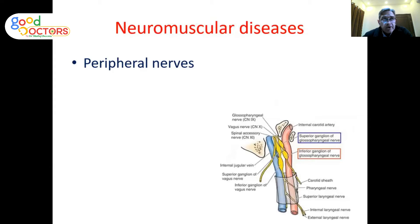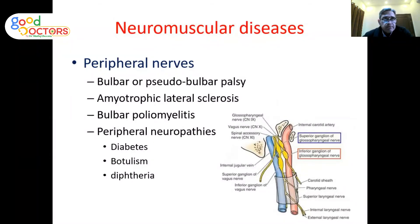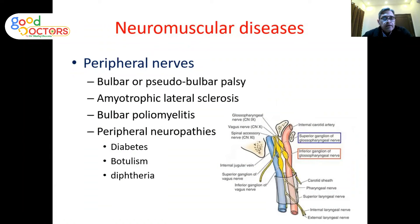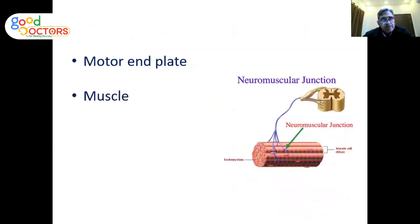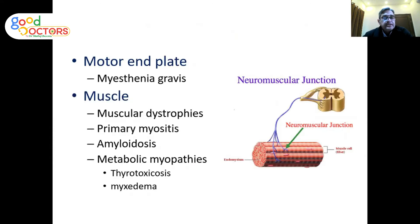If the problem is with peripheral nerves, diseases include bulbar palsy, pseudobulbar palsy, amyotrophic lateral sclerosis, poliomyelitis, and peripheral neuropathies due to diabetes, botulism, and Guillain-Barré syndrome. At the neuromuscular junction, myasthenia gravis is the most common cause. Diseases of muscle cells include muscular dystrophy, myositis, and metabolic causes.